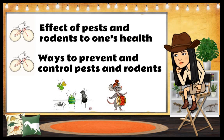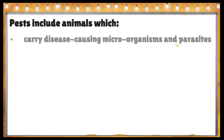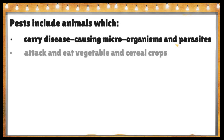From time to time pests and rodents can become overwhelming to us. A pest is any animal or plant which has a harmful effect on humans, their food, or their living conditions. Pests include animals which carry disease-causing microorganisms and parasites — for example, mosquitoes which carry Ross River virus and Murray Valley encephalitis.